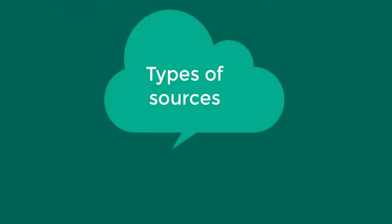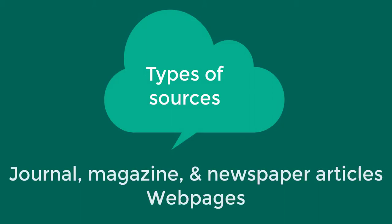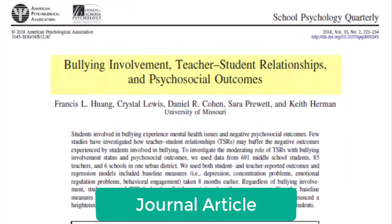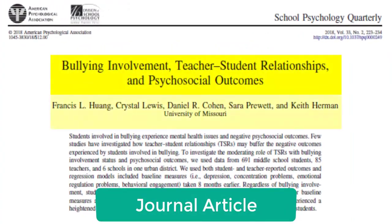We'll cover some common types of sources you may need to cite in your papers, including journal articles, magazine and newspaper articles, and web pages. First, let's identify where you will find the information needed for your citations. You'll need the title of the article and the authors. Other information you need is typically at the top or bottom of the article.